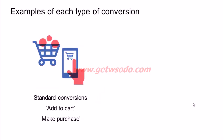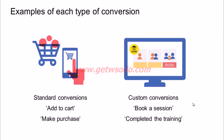To give you an example of each type: a standard event could be add to cart or make purchase. A custom conversion could be something more customized, like book a session or completed a training. The key difference in setup: for a standard conversion, you have to add those standard event codes into the Facebook pixel through your tech team. For a custom conversion, you don't have to touch the pixel at all — once it's on your website, you just go to Facebook, create a custom conversion, and give the specific URL where you want that conversion to trigger.